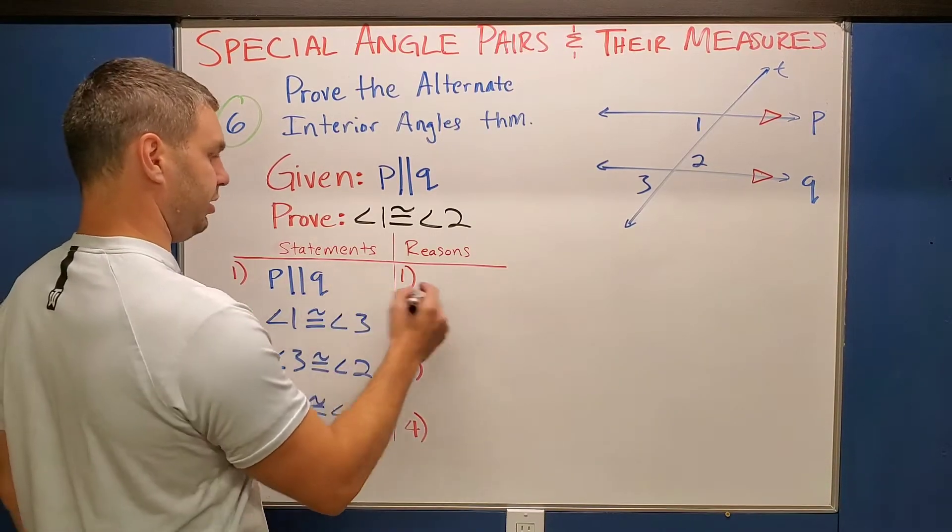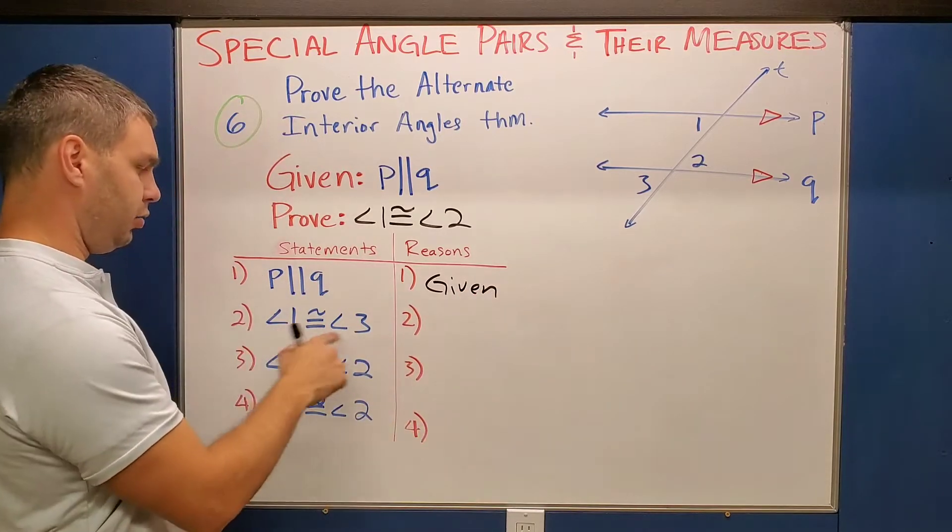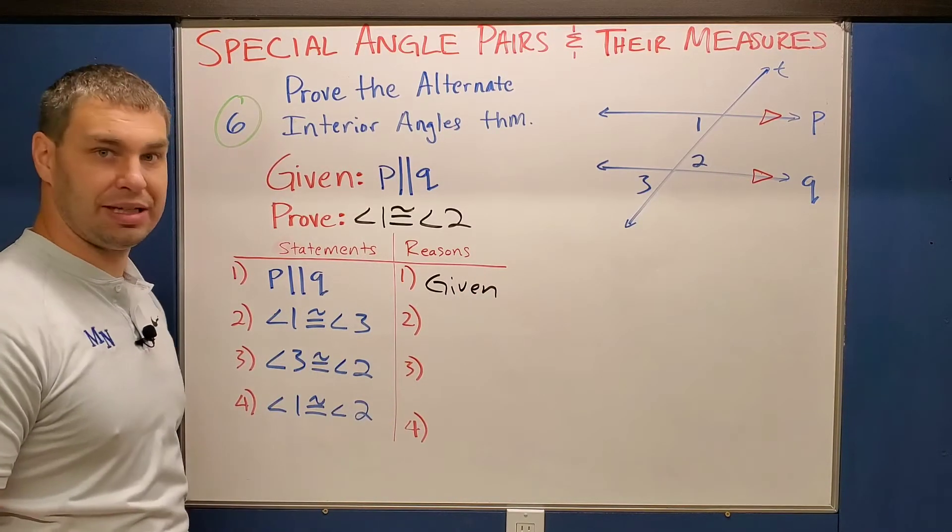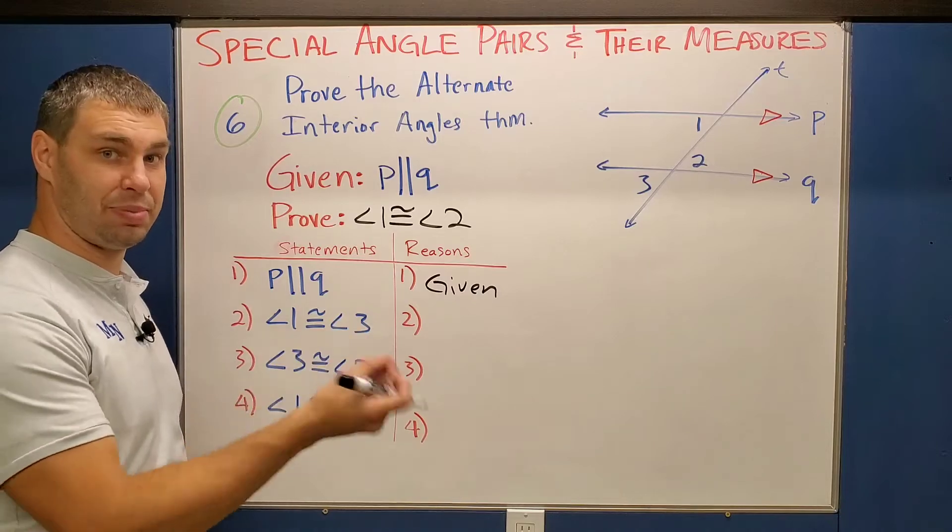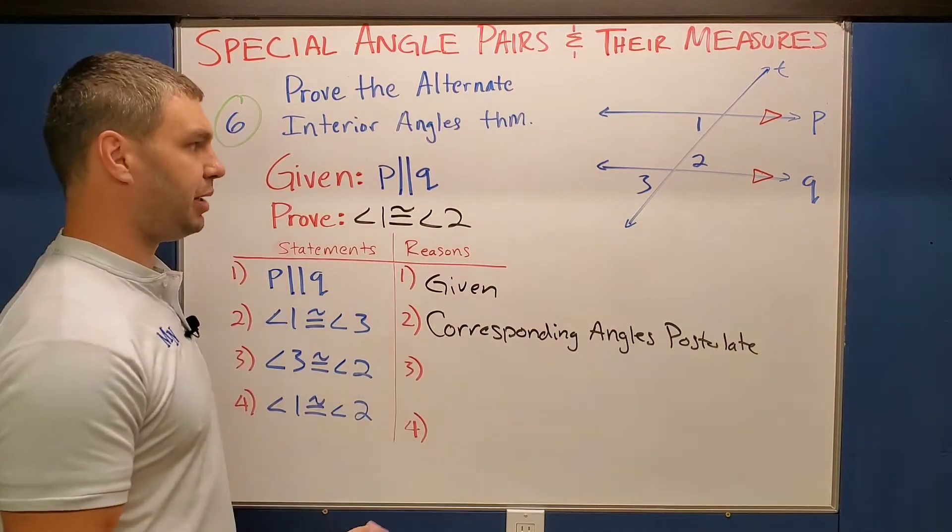Well, first off, P is parallel to Q. That's my given. And then angle one is congruent to angle three because of our corresponding angles postulate.